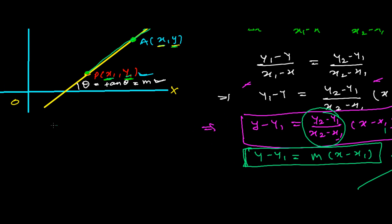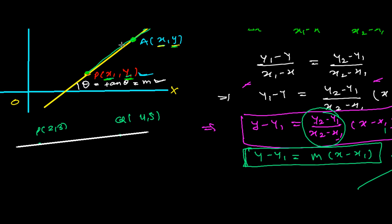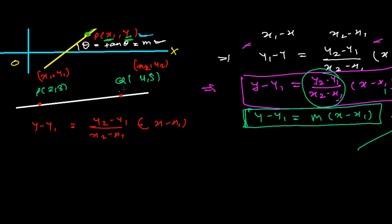Based on the two-point form, let's try to solve a problem. Suppose I have point P which is (2, 3) and another point Q which is (4, 5). I need to find the equation of the line passing through P and Q. Using the formula: y - y₁ = (y₂ - y₁)/(x₂ - x₁) times (x - x₁). Here x₁=2, y₁=3, x₂=4, y₂=5.